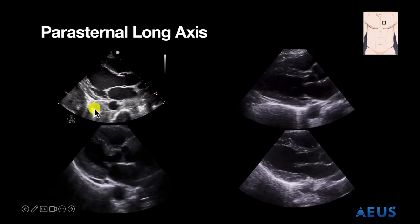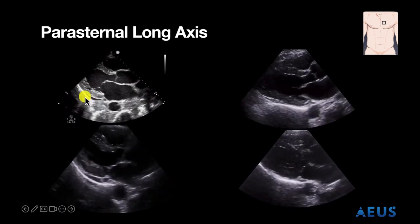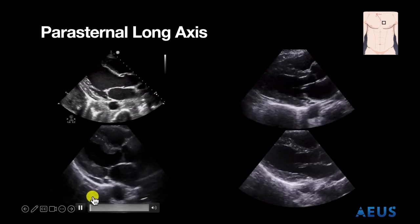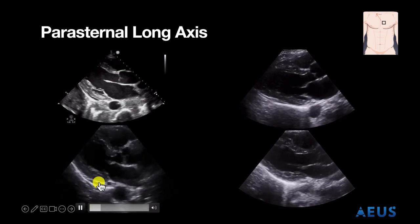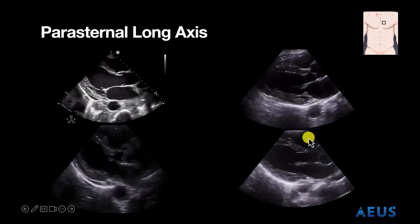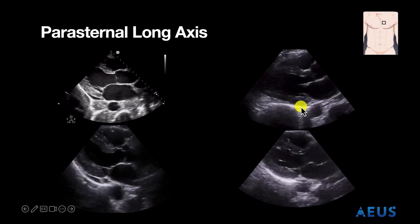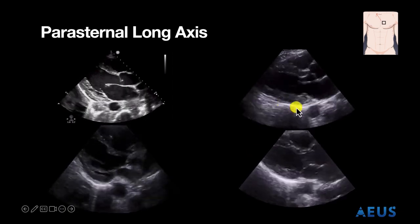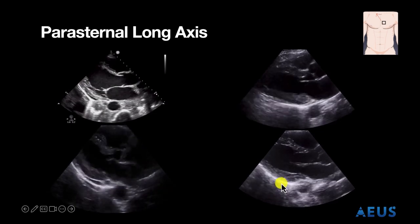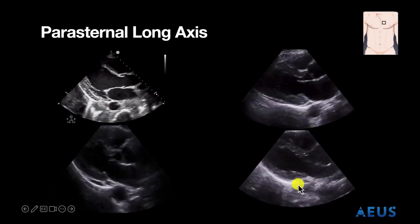The hyperechoic line that we see here is the pericardium. We can see a small pericardial effusion here, and we can also see a small pericardial effusion over here. In this view we do not see a pericardial effusion in this heart, and similarly here we do not see a pericardial effusion in this heart.